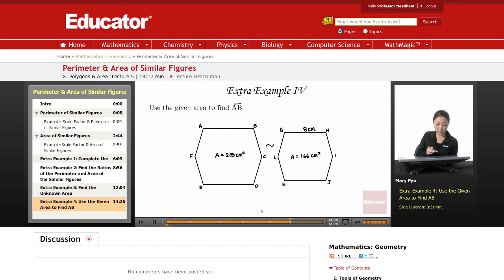And the last example, use the given area to find A, B. So this is what we're looking for here. Area is given here, area is given here. This is also given, the corresponding side is given.